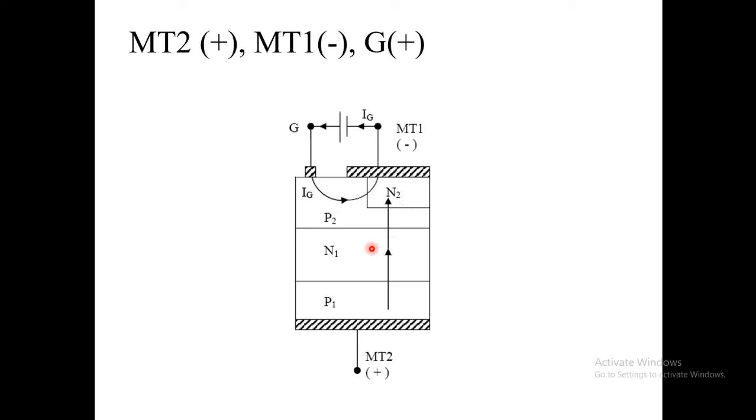Now, to turn on the TRIAC, we have to apply positive gate current. So positive gate current will forward bias the junction P2N1, and current flows from MT2 positive, P1N1, P2N2, and to MT1. So in this case, TRIAC is more sensitive. So this is case 1.